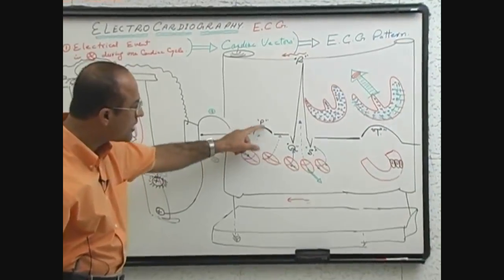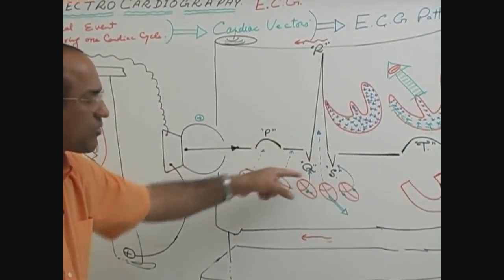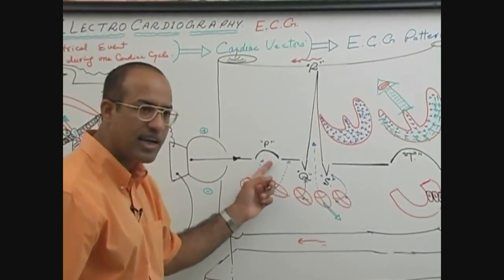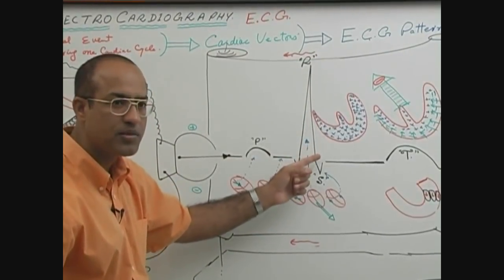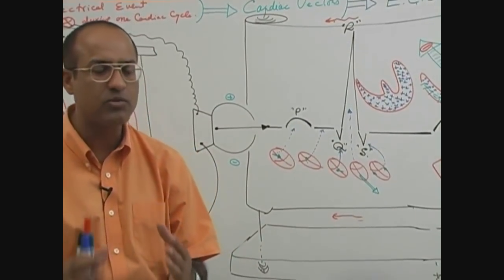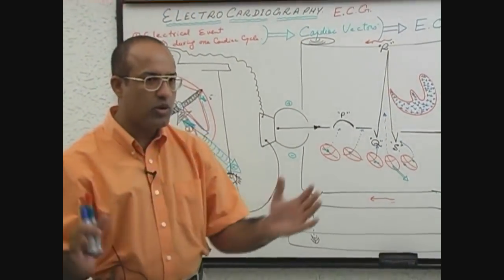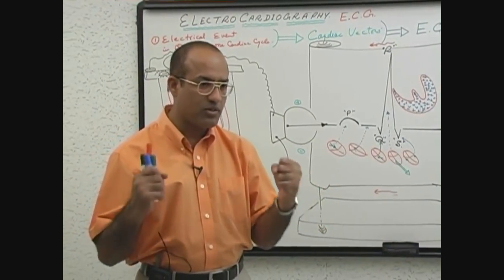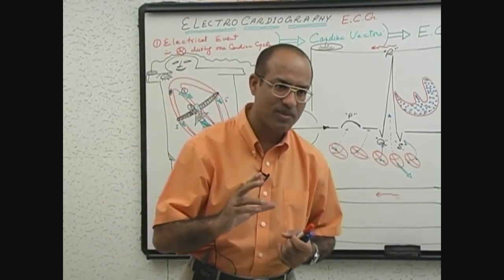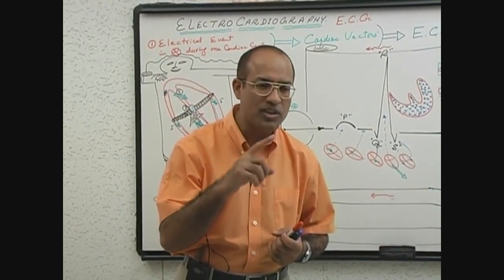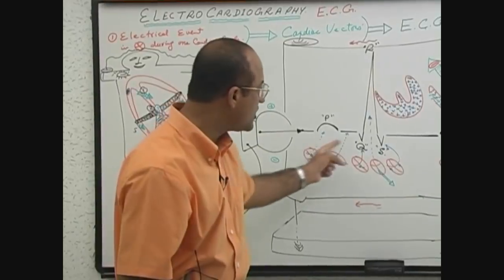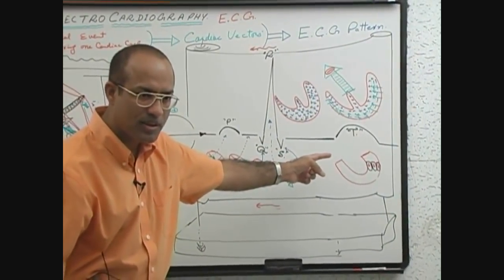The P wave shows atrial depolarization, but there is no wave showing atrial repolarization. When the atria are repolarizing, the QRS complex is being formed. Atrial repolarization is a weak electrical activity, but the QRS complex — representing ventricular depolarization spread — is a very strong electrical activity, so atrial repolarization is masked and unable to move the needle independently. Thus atrial repolarization is not visible in the ECG tracing.